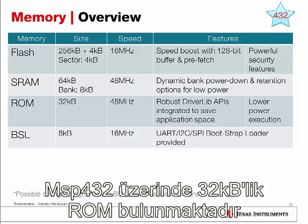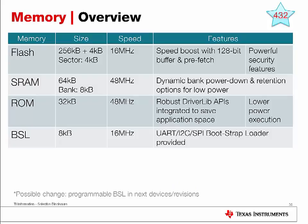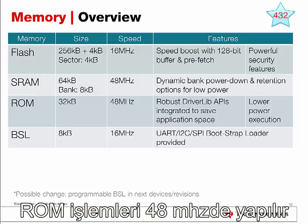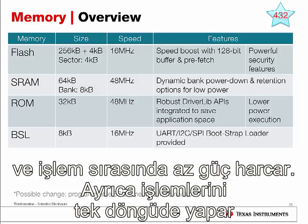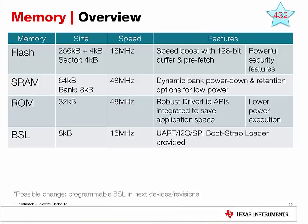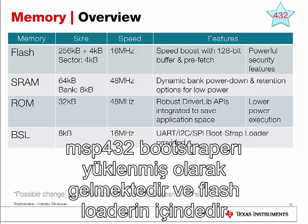The MSP432 also comes with 32 KiloBytes of ROM memory. What's stored in ROM is a robust MSP432 DriverLib API that is integrated to save application space. ROM memory also requires less power to execute from. In addition, it requires single-cycle execution all the way up to 48 MHz, which is definitely a benefit when using ROM.